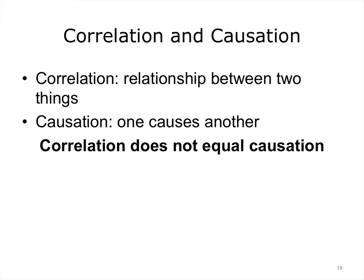Two important concepts in statistics and analytics are correlation and causation. Correlation is the relationship between two things — in statistical analysis, it is a measurement of the relationship between two variables. Causation is that one thing causes another. For example, we know that the measles virus causes measles disease, and smoking causes certain types of lung cancers. However, an important concept to remember is that just because there might be a statistical correlation between two things does not mean that one causes the other. For example, there might be a statistical correlation between patients with a particular eye color and a certain disease, but the eye color is not the cause of the disease.